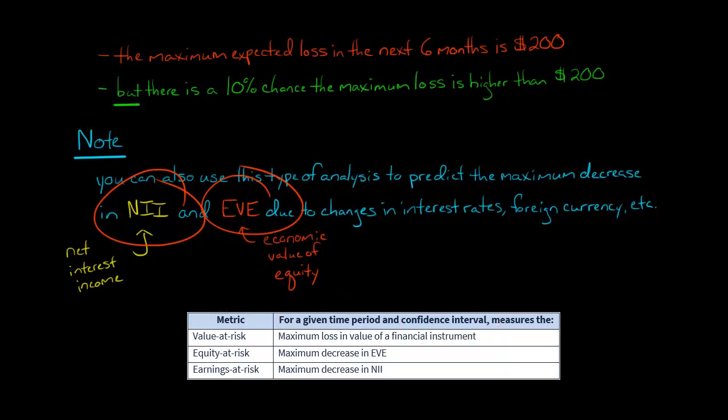But when we look at it as the maximum decrease in the economic value of equity for the bank, we call it equity at risk. It's the same idea - we're thinking about the maximum decrease in the bank's equity for a certain period of time for a certain confidence level. When we look at the maximum decrease in net interest income of the bank, we call it earnings at risk. In each case, it's the same concept: we're looking at the maximum decline we could have over a certain time period for a certain confidence level.